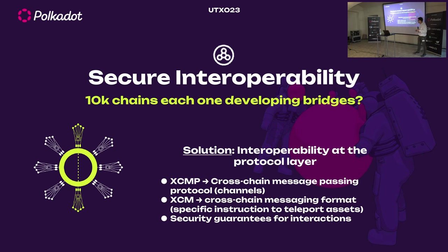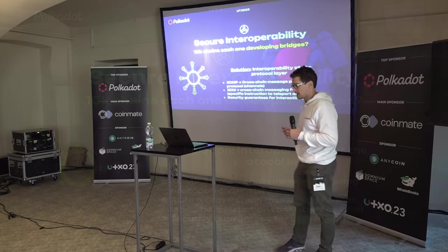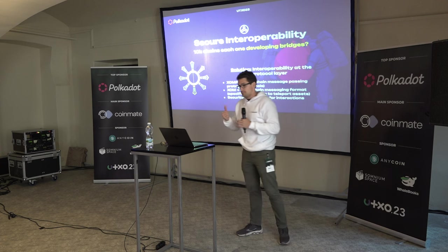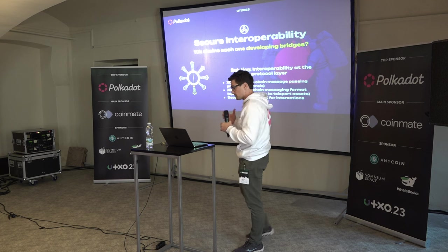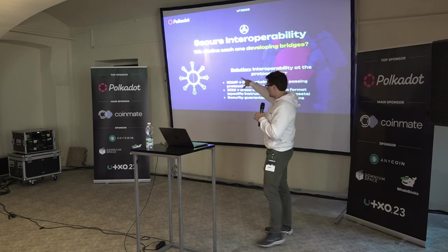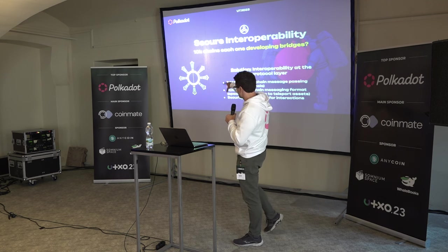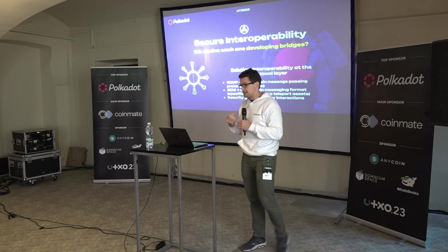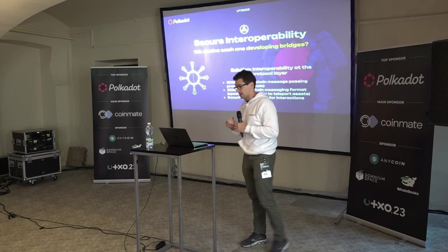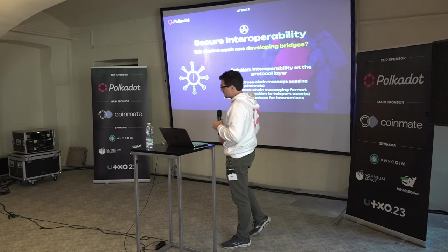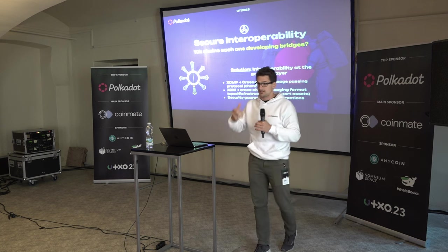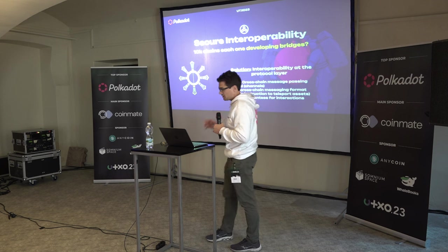Secure interoperability is another big future problem. We cannot think that 10,000 chains will each build bridges. Building bridges is a complex task — bridges are, by far, the weakest point in a multi-chain environment. Most of the hacks happen on bridges, and we cannot imagine that each parachain team will be able to build secure bridges. What Polkadot provides are tools — as shown in the schematics — where two parachains can open a channel and transfer value. We have XCMP, a message passing protocol for building channels, and XCM, a format for sending specific messages between parachains, all with security guarantees.